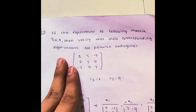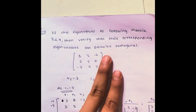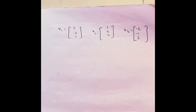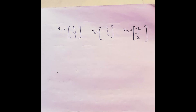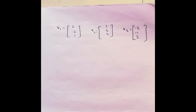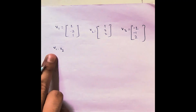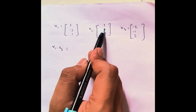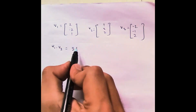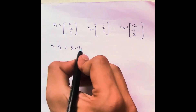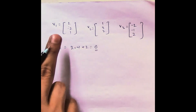Now we have to verify whether these eigenvectors are pairwise orthogonal. For that we check the dot products. If all dot products equal zero, they are pairwise orthogonal. Dot product of V1 and V2: 2 into 1 is 2, minus 2 into 2 is minus 4, 1 into 2 is plus 2. Total: 2 minus 4 plus 2 equals 0. So dot product of V1 and V2 is 0.